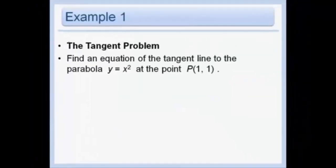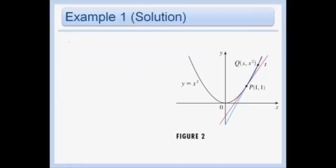Here's our first example of the tangent problem: find the equation of the tangent line to the parabola y equals x squared at the point (1, 1). Here's a graph of y equals x squared, and this red line is our tangent at the point (1, 1). We want to find the equation of that red line. We normally find the equation of a line using two points to get the slope, but we have a problem — we don't have two points.